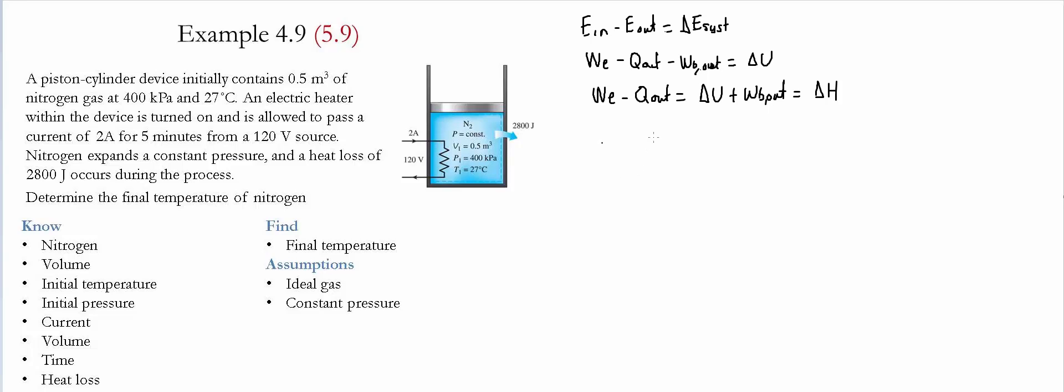Now we're going to describe how to calculate each of these terms. The amount of work produced by the heater is equal to the voltage, the current, and the change in time.